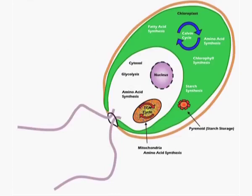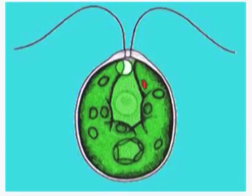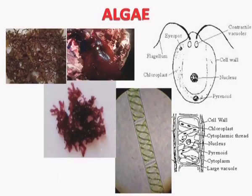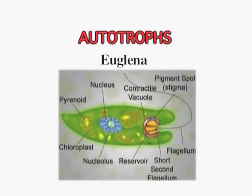Chlamydomonas has flagella and can move about with their help. The nutrition in protistans is diversified. They can be parasitic — living inside the body of the host — for example, Trypanosoma and Leishmania, which cause diseases: Leishmania causes Kala-azar, and Trypanosoma causes sleeping sickness in human beings. They can be autotrophic, like Euglena, or saprophytic or heterotrophic.